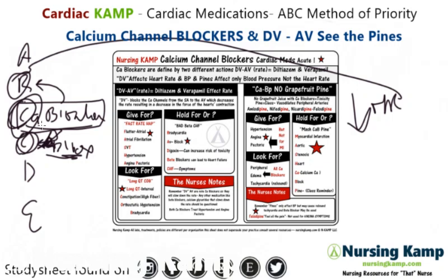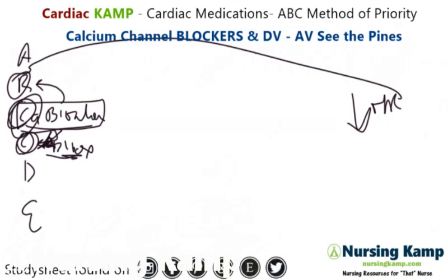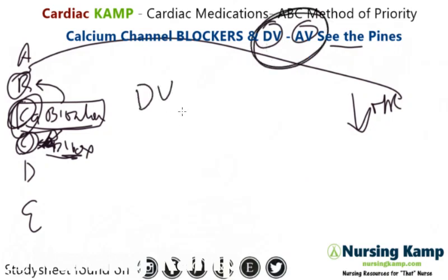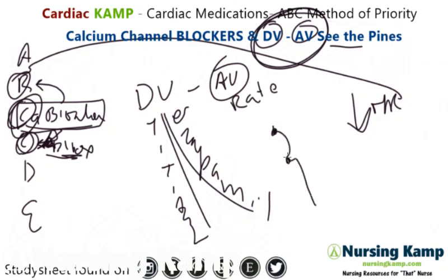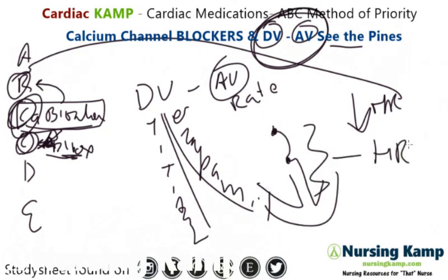Calcium channel blockers are given for AFib, AFlutter, and hypertension, but there's a distinct difference between the two types. The first type is called DV — diltiazem, like Cardizem, and verapamil. These are more acute because they deal with the AV node. The conduction goes SA node to AV node to ventricle, producing heart rate, and these drugs slow things down along that pathway.